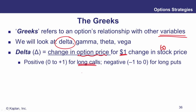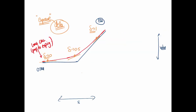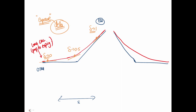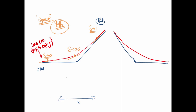For long calls, delta is between zero and plus one. For long puts, the analysis is analogous. The put will trade on a curve prior to expiry. We're in the money on the put when the underlying is low relative to the strike, and out of the money when the underlying is high relative to the strike.